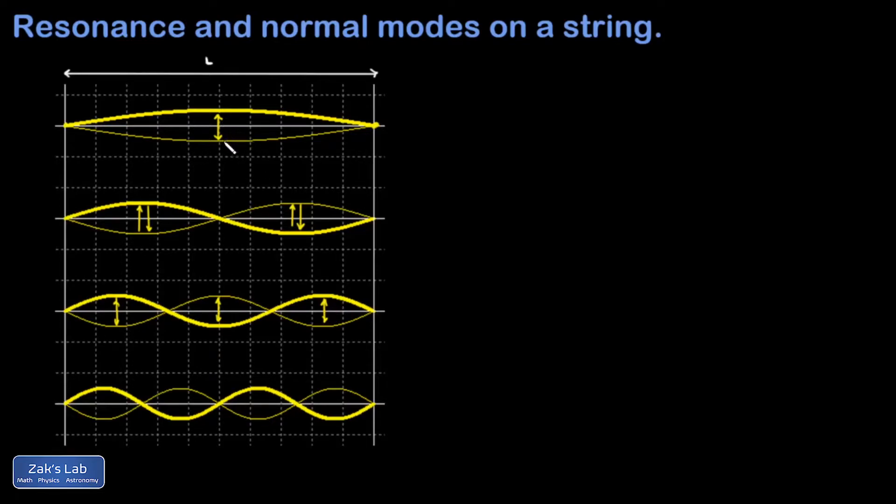These are called standing waves because when you actually observe them, these regions of large amplitude are just blurred out and they're separated by these points that appear motionless in between.